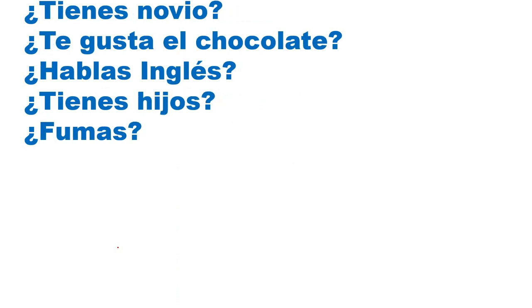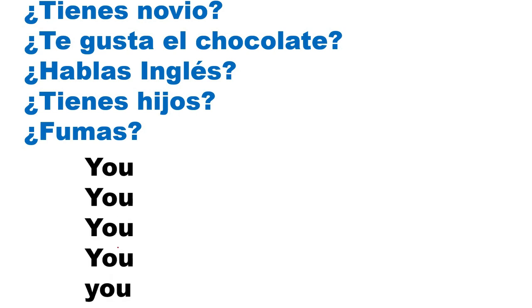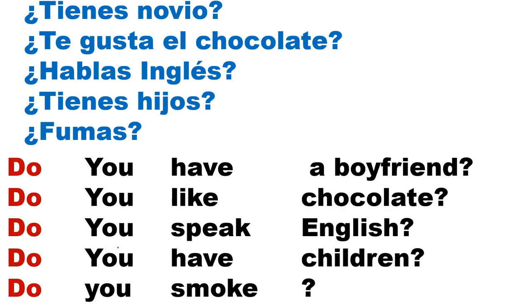Now in these examples there is no question word. So the first thing you need to identify is the pronoun. Using the correct auxiliary verb — 'do' — then the verb, then the complement. Repeat after me: Do you have a boyfriend? Do you like chocolate? Do you speak English? Do you have children? Do you smoke?